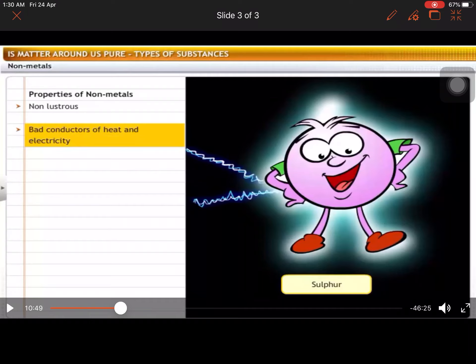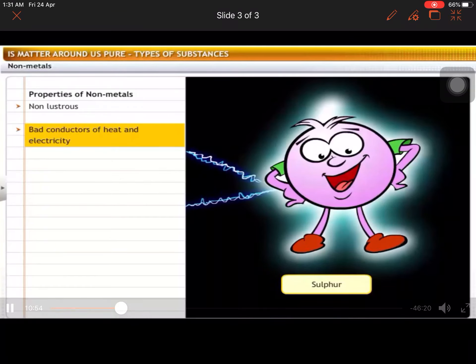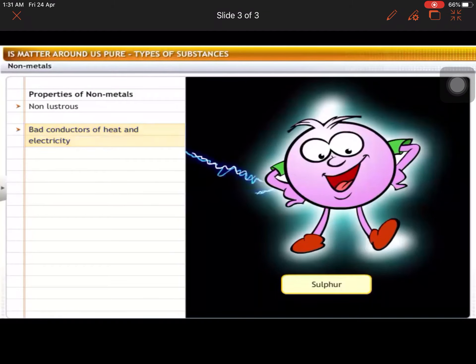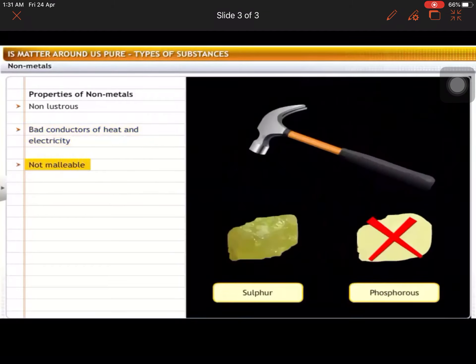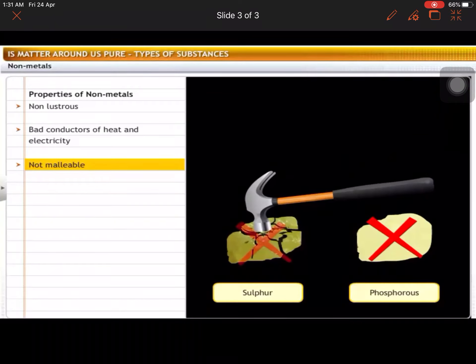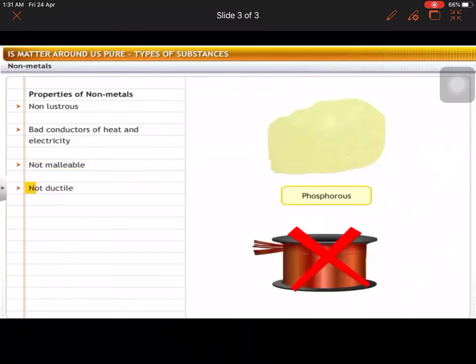But if you have a metal spoon and you heat the spoon, the whole spoon will be warm and you will feel the heat. Correct? So heat and current don't flow in non-metals. We will talk about how current flows in the topic of current electricity. So they do not conduct heat and electricity. For example, sulfur. They are not malleable - they cannot be drawn into sheets. For example, sulfur and phosphorus. Non-metals are non-ductile - they cannot be drawn into wires. For example, phosphorus.